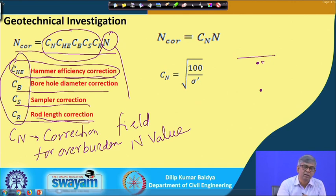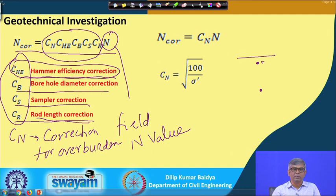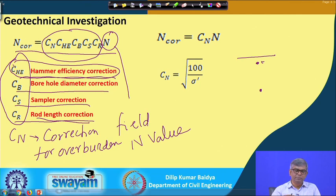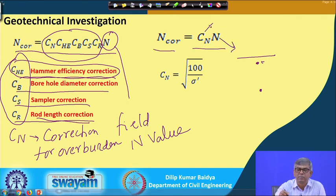These corrections are given in the literature in the form of recommended numbers based on experience. What is most important to calculate directly is the overburden correction. We frequently correct at least for overburden correction Cn. Ignoring other factors for simplicity, N-corrected equals Cn multiplied by the field N value.